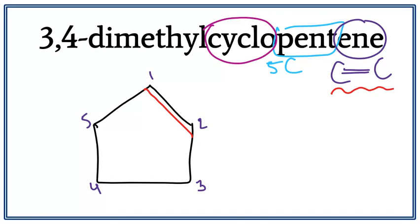So we have the cyclopentene drawn in. Now we need to attach the dimethyl. Dimethyl means that there are two methyls attached to the cyclopentene, one on the third carbon and one methyl on the fourth carbon.